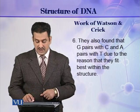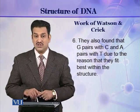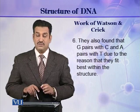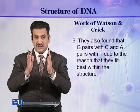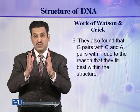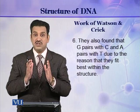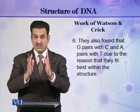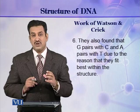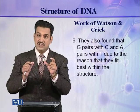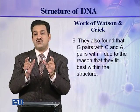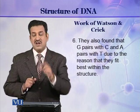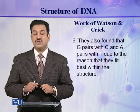The next important point they described is that G will always pair with C while A will always pair with T. This is because, in a uniform helix, A (adenine), which is a purine and of larger size, pairs with T (thymine), which is a pyrimidine and of smaller size. Similarly, G is a purine of larger size, and C is a pyrimidine of smaller size.